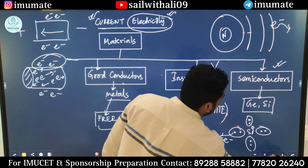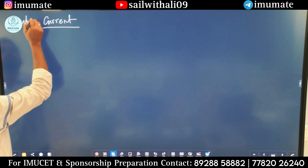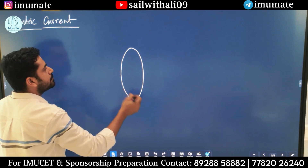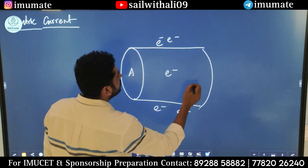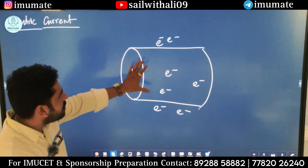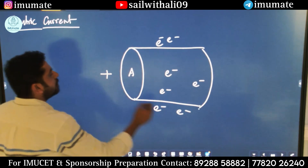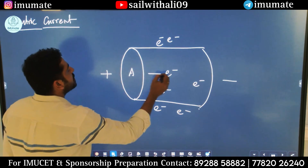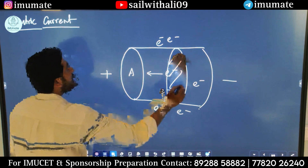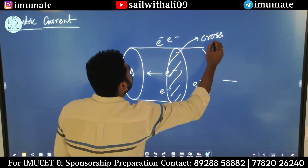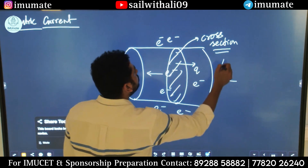So this is the very beginning of current electricity. Now we will see what is electric current. Let's say this is our conductor having area A, and there are free electrons always present on the outer surface of the metal. Now for metals, these free electrons at normal temperature roam around in different directions with different speeds. But when you apply a potential difference, these free electrons will start going towards the positive pole of the battery. If you consider an area A — let's say this area A, or any cross-section.